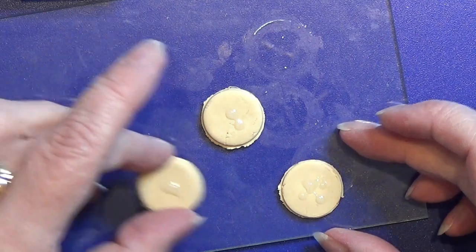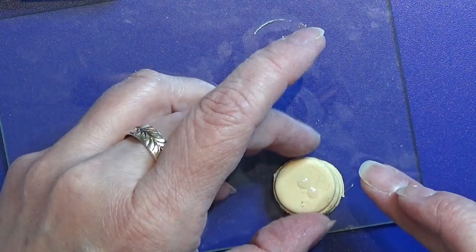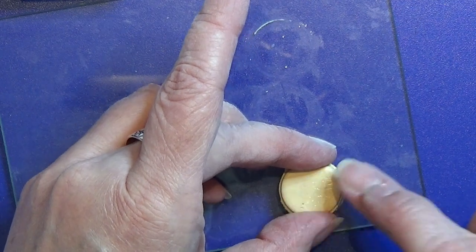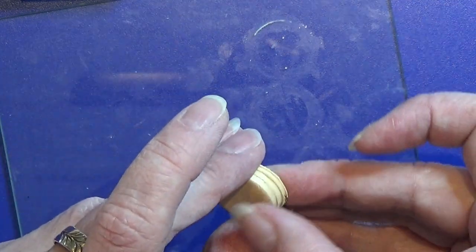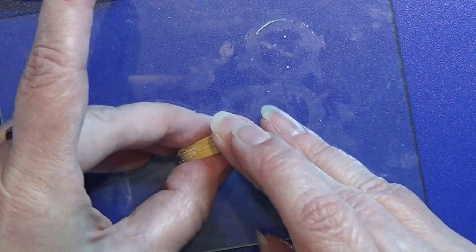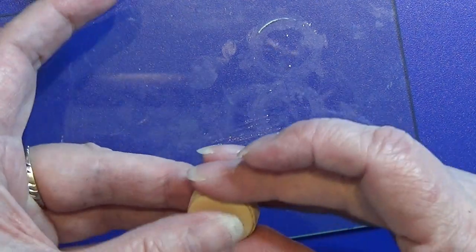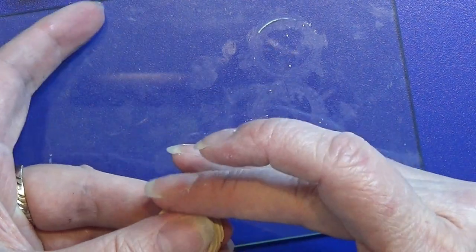I'm using a tiny bit of liquid fimo to bond these three together, placing them on top of each other. Then I'm just going to really squeeze them together and roll them until I like the shape. I'm going to do this with a few more, and when I'm ready I bake them all.